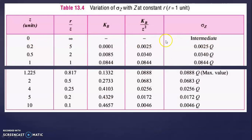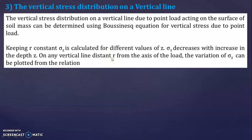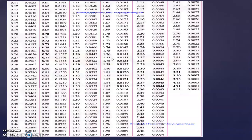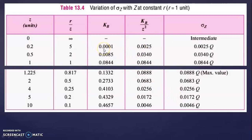Next, consider Z equal to 0.2. R divided by Z is 1 divided by 0.2, which equals 5. From the table, there is no exact entry for 5, but between 4.91 and 6.15 the KB value is 0.0001. So KB equals 0.0001. Then KB divided by Z squared is 0.0001 divided by 0.2 squared, giving 0.0025.